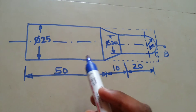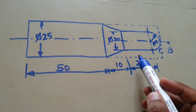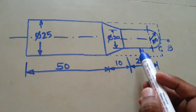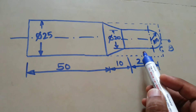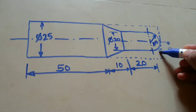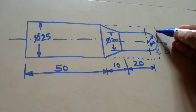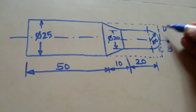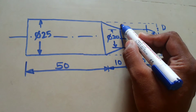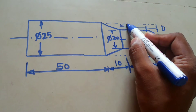Since this is diameter 25 and we have to achieve diameter 20, we will remove this material in two steps. In the first step we will remove some material and make the diameter 22. After the tool touches the workpiece and performs the facing operation, it should reach point D, so that from D we can do further machining to remove material from here.